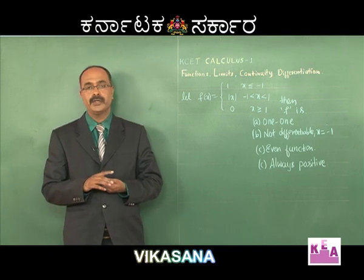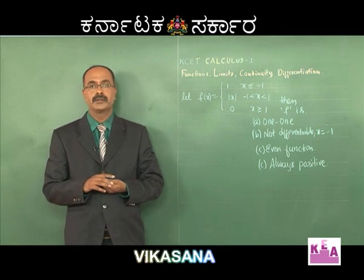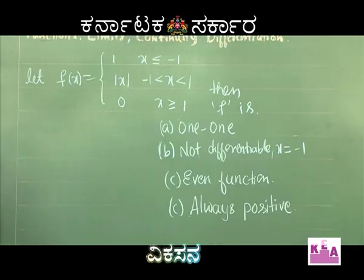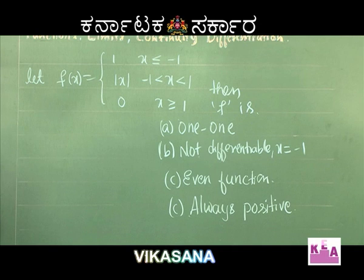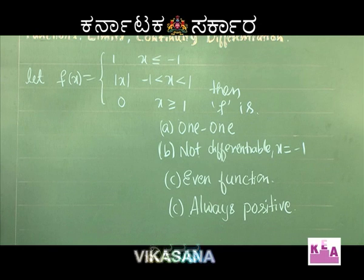Let us discuss the next problem. Let f(x) equal 1 for x less than or equal to minus 1, mod x for minus 1 less than x less than 1, and 0 for x greater than or equal to 1. The options are: (A) f is one-one, (B) not differentiable at x = minus 1, (C) even function, and (D) always positive.